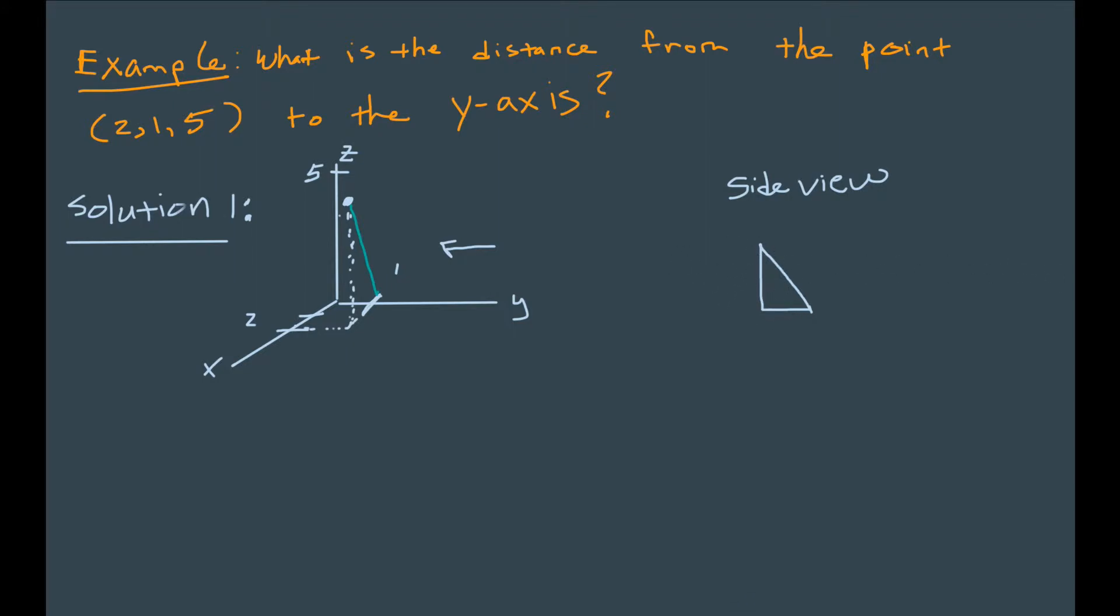So if we look at it from the side view, the distance we want to find here is this green line. It's our distance d that we want to find. Now the height is the z-value, and this distance down here is 2. So this distance down here corresponds to the base of the triangle. The height corresponds to the z-value, that's 5.